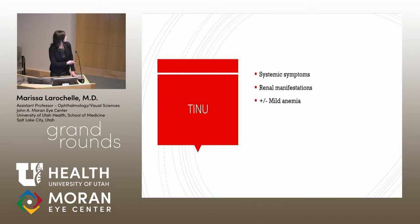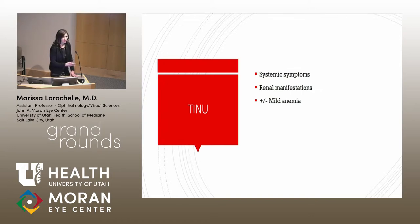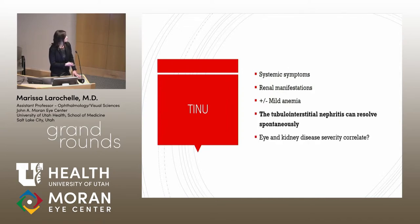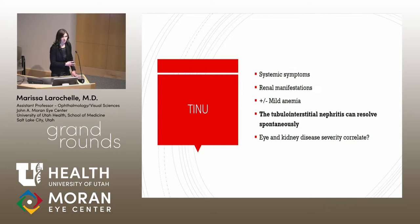The hallmark feature of TINU is the systemic symptoms — arthralgias, weight loss, fever, and fatigue. The renal manifestations vary from sterile pyuria to proteinuria and actual kidney dysfunction. Patients can report nocturia, and inflammatory markers like ESR, CRP, and a mild anemia are common. In some cases, the tubular interstitial nephritis can resolve without treatment; however, the renal prognosis is variable, with some cases having permanent renal dysfunction even with treatment. It is unclear in the literature whether the severity of the uveitis correlates with the nephritis.